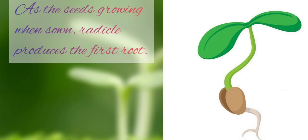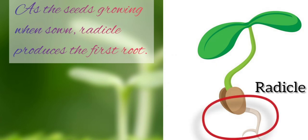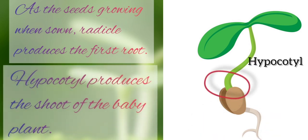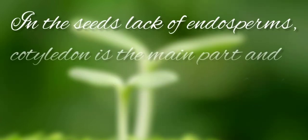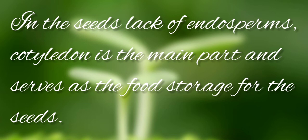As the seed starts growing when sown, the radicle produces the first root. The hypocotyl produces the shoot of the baby plant. The cotyledons give rise to the primary leaves. In seeds that lack endosperm, the cotyledon is the main part and serves as the food storage for the seed.